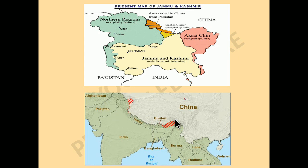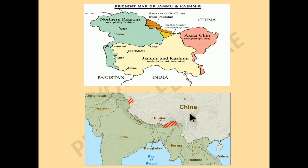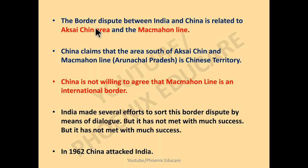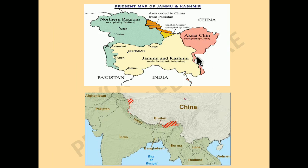The next issue is Arunachal Pradesh. There is a province called Tawang — China claims that this Tawang area belongs to them, and that a part of Arunachal Pradesh is Chinese territory. The main regions of border dispute between India and China are Aksai Chin and the McMahon Line. The McMahon Line is the original India-China border line, drawn by a person called McMahon. China claims the area south of Aksai Chin and the McMahon Line as Chinese territory.